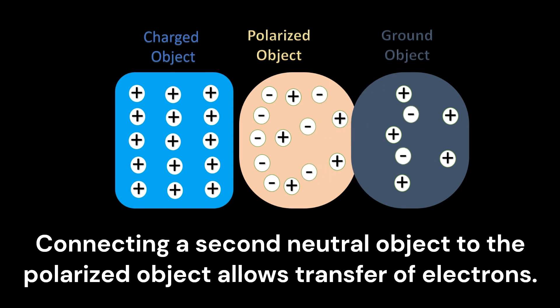If the charge in the first phase is positive, electrons from the ground object will transfer to the polarized object, making it negatively charged.